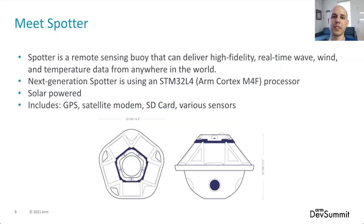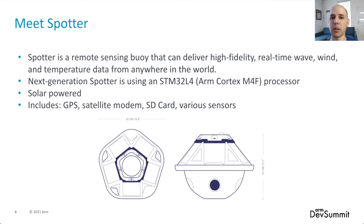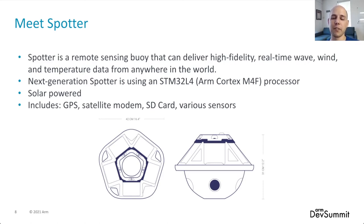So meet Spotter — this is our protagonist. The next generation is going to have an STM32 L4 Cortex-M4F processor. It's got GPS, a satellite modem, an SD card for logging, and a bunch of different sensors.